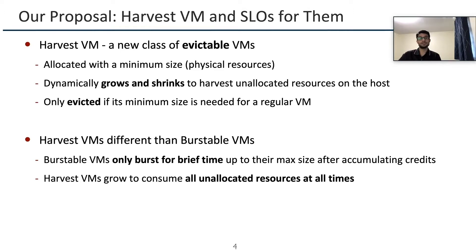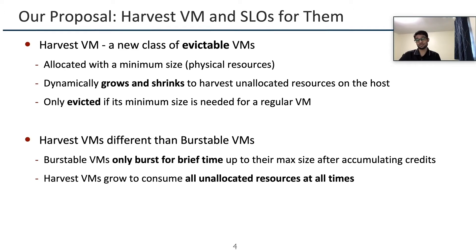To address these limitations of spot VMs, we introduce Harvest VMs, a new class of evictable VMs. These VMs come with a minimum size in terms of their physical resources and can dynamically grow and shrink to harvest unallocated resources on the host server. Importantly, Harvest VMs are only evicted when their minimum size is required for a regular VM. Currently, cloud platforms offer another class called burstable VMs, where they can burst for a brief amount of time after accumulating enough credits. But Harvest VMs can grow or burst depending on the number of unallocated resources on the host server and don't come with any artificial time limitations.